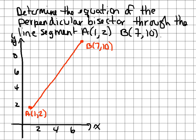I've graphed the situation. We have line segment AB with endpoints (1, 2) and (7, 10). The perpendicular bisector will look something like this — perpendicular to AB and going through the midpoint. Since AB has a positive slope, the perpendicular bisector will have a negative slope, passing through somewhere around here.